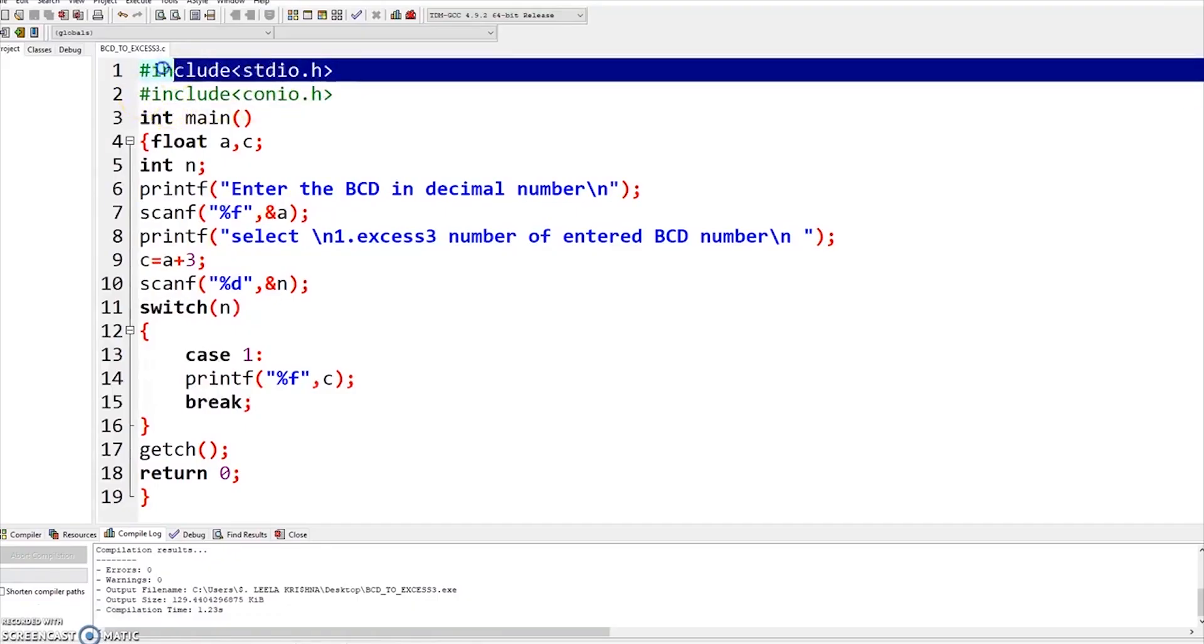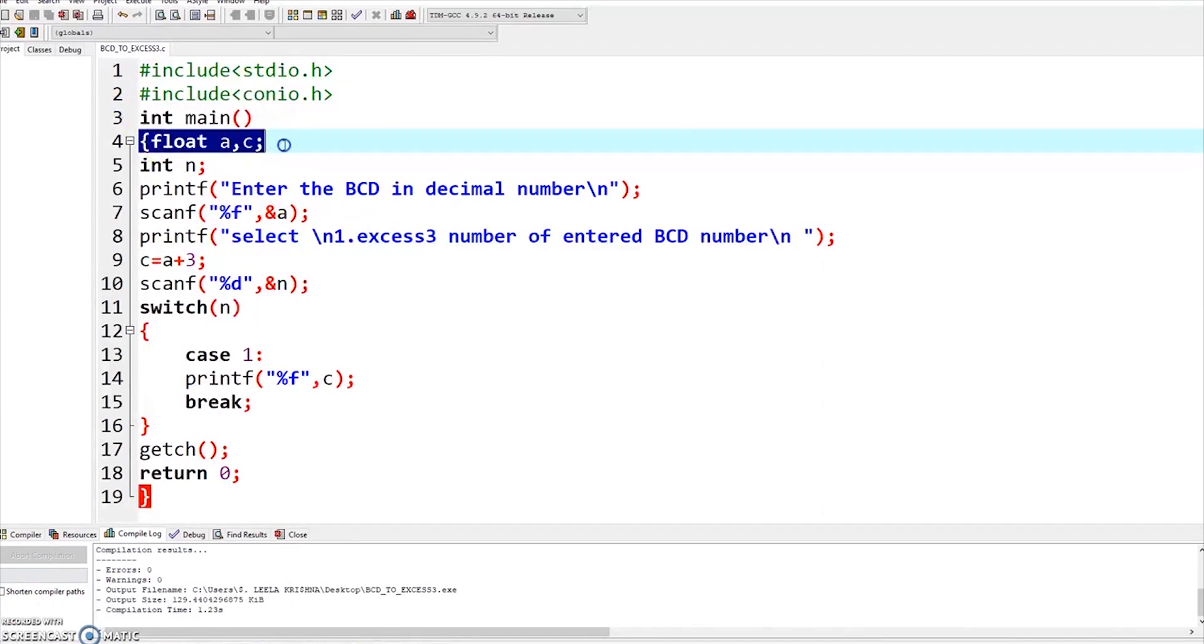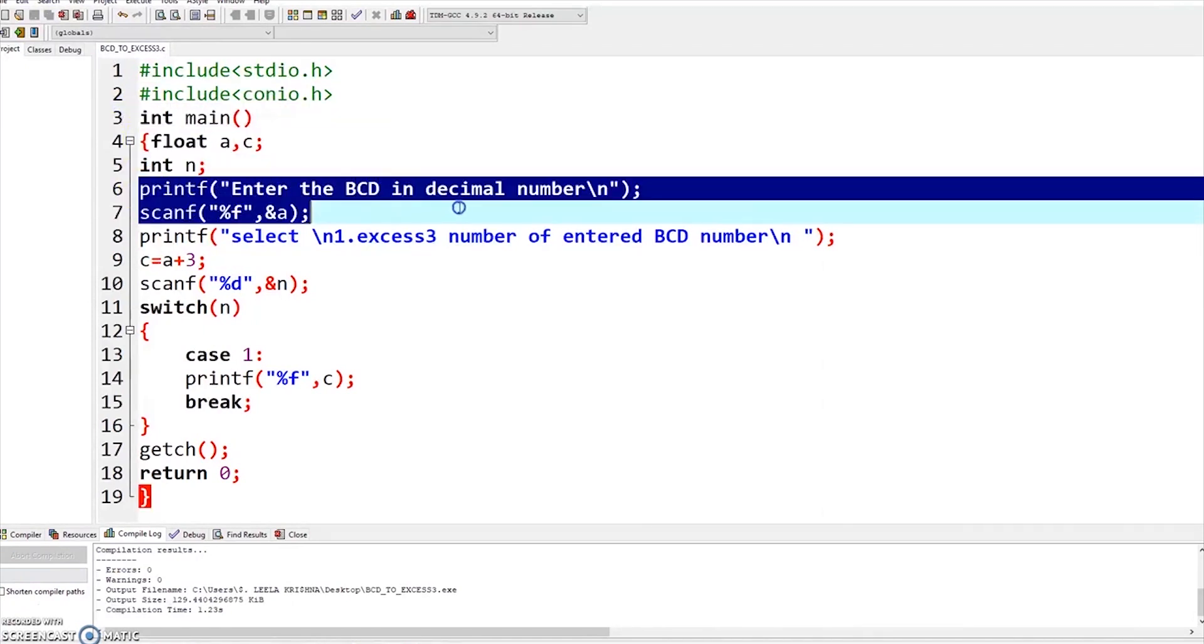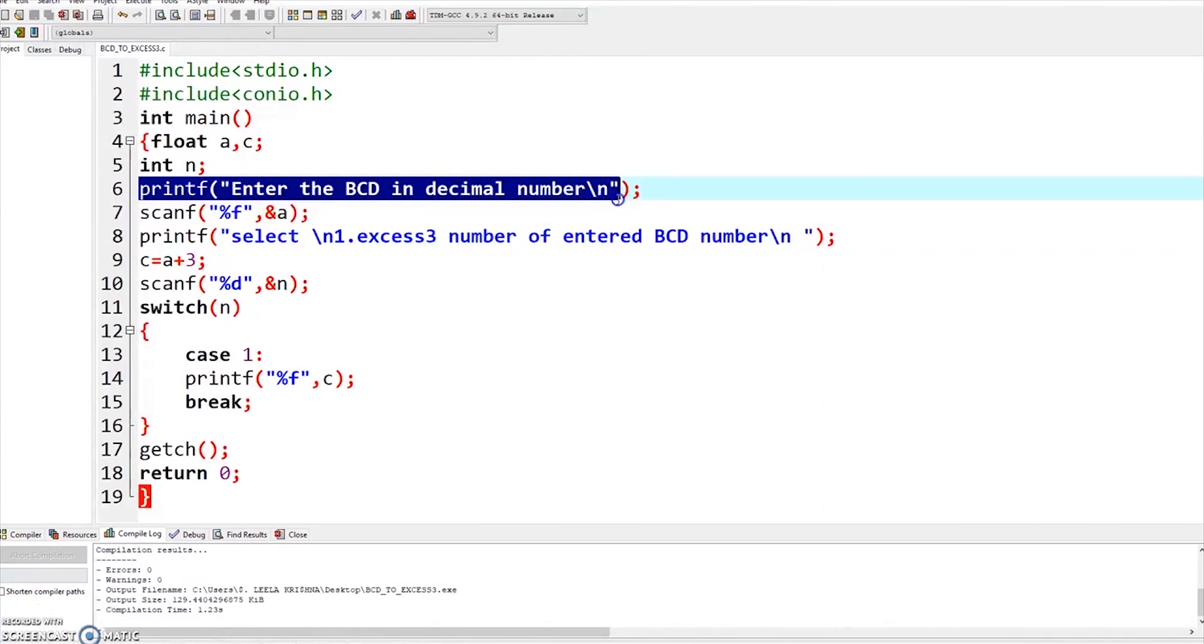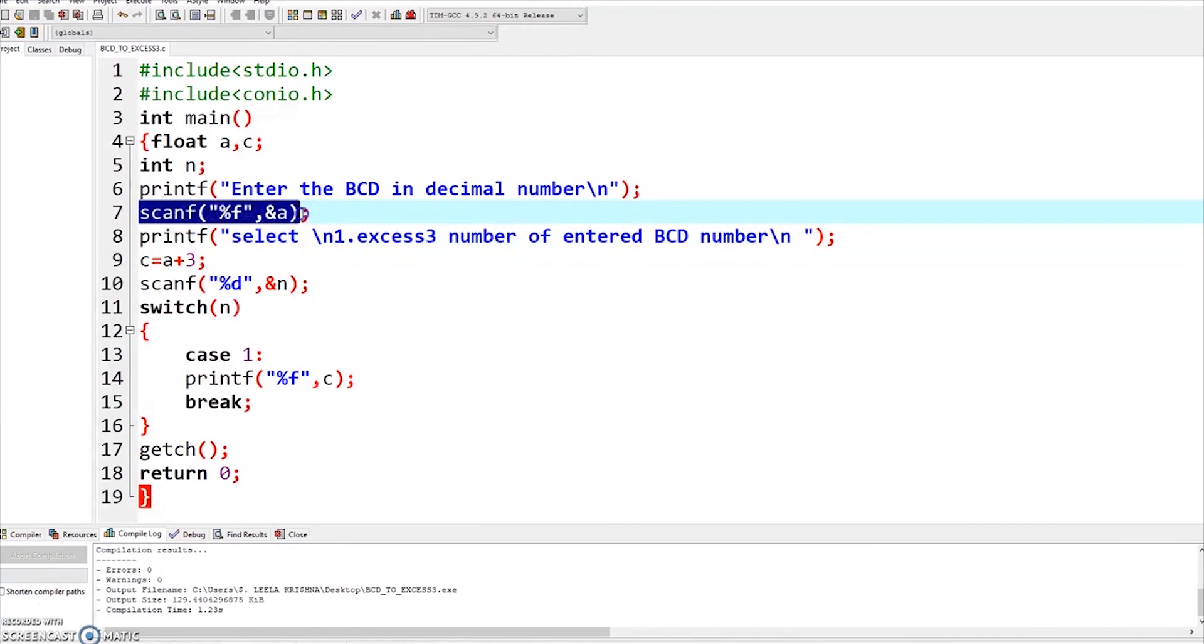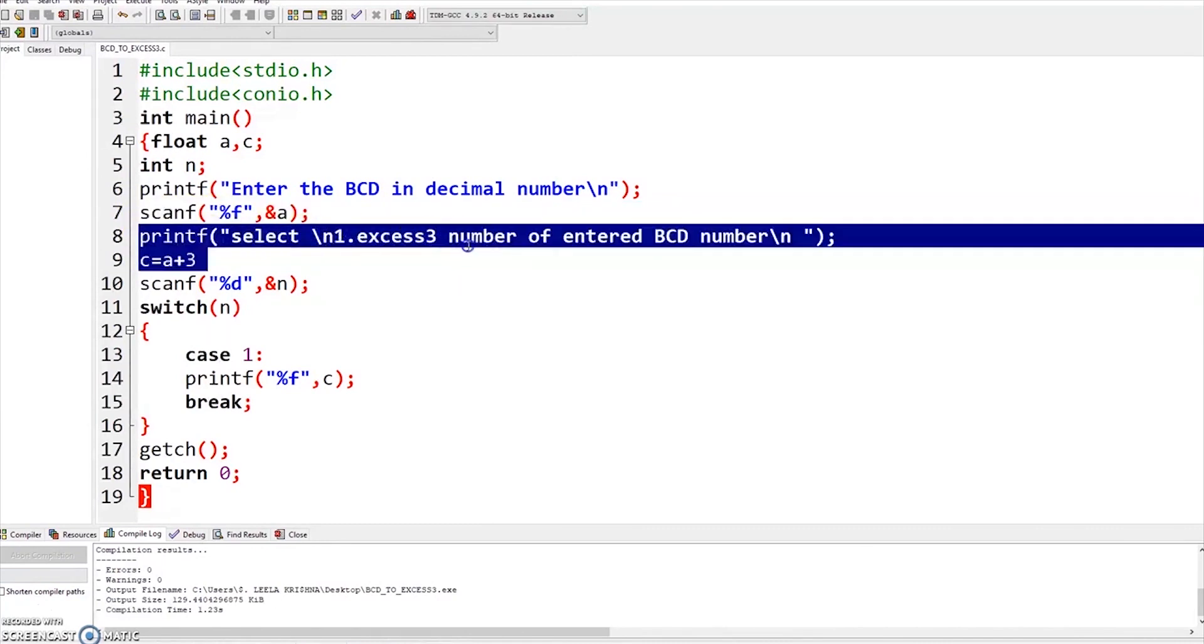This is the C programming language implementation for BCD to Excess-3 Code Converter. Here are the header files I have included. I have taken float variables a and c and integer variable n. I am displaying a message for the user and using a scanf statement to store the element entered by the user.